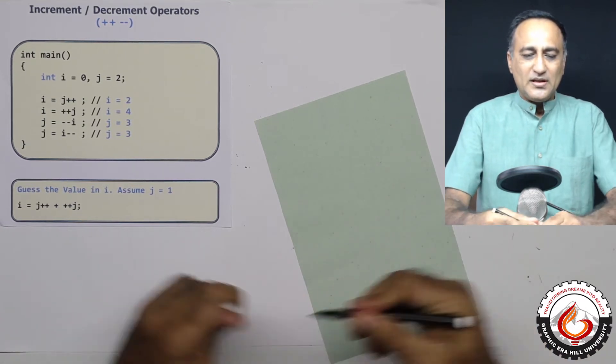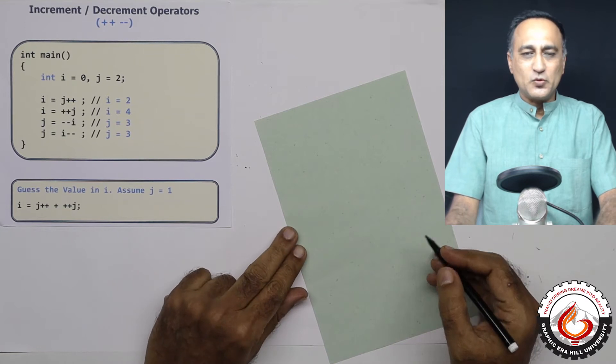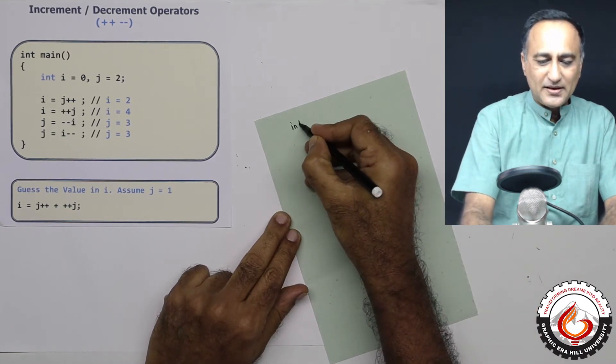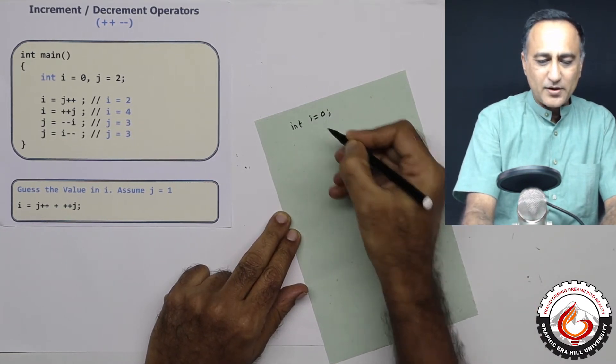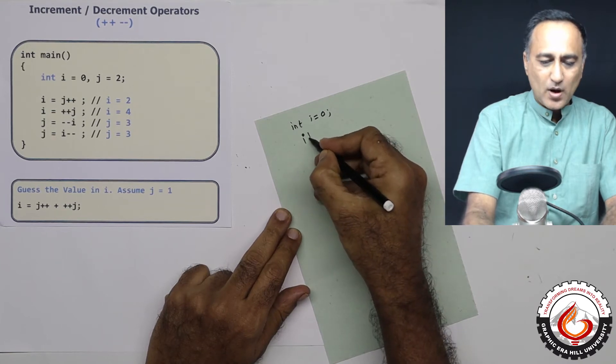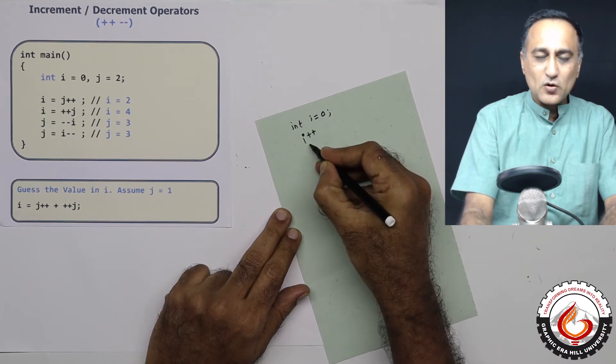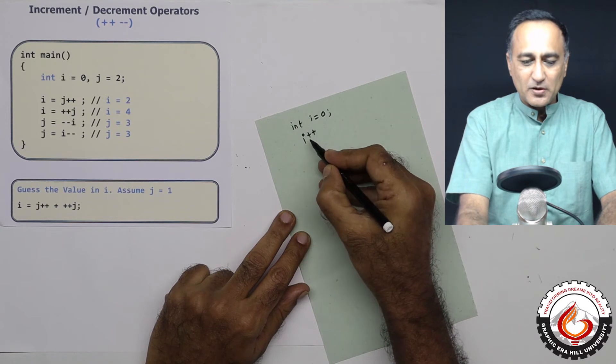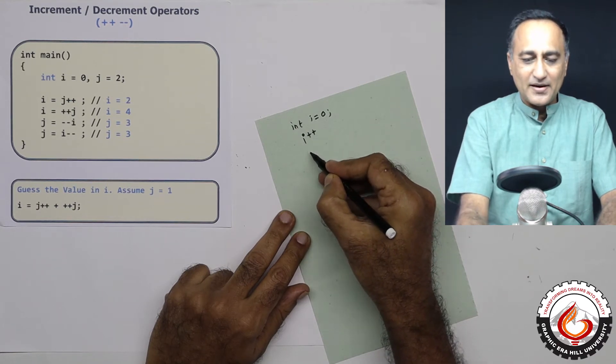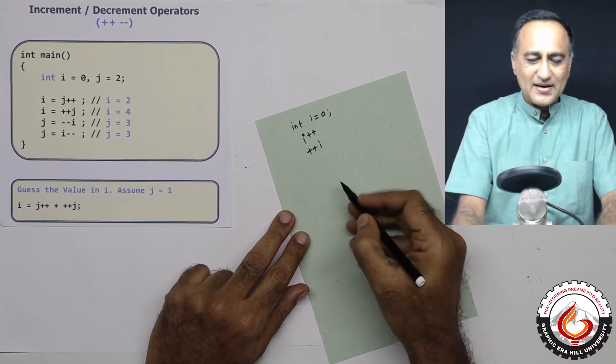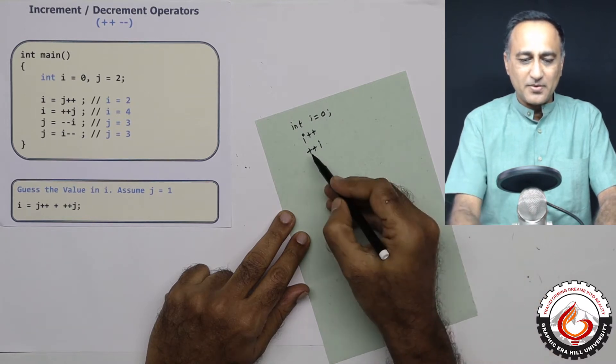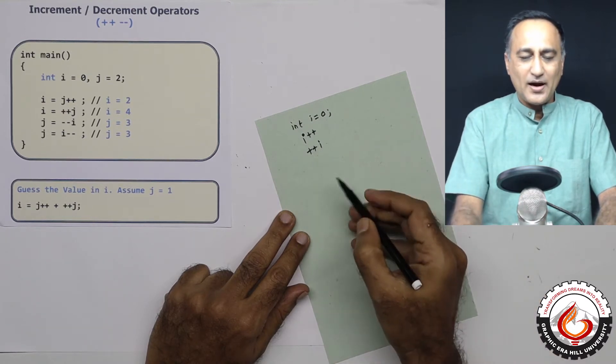So what the increment and decrement operators do: suppose I have a variable int i assigned the value zero. If I do i++, this is called the postfix increment because the ++ comes after i. If I do ++i, this is called the prefix increment because the ++ comes before i.